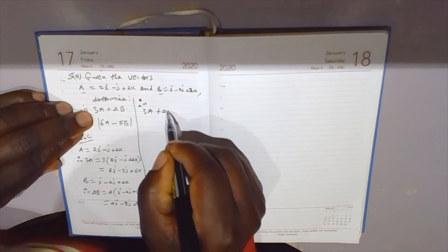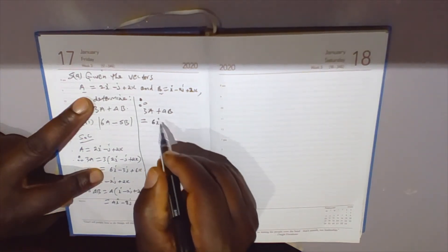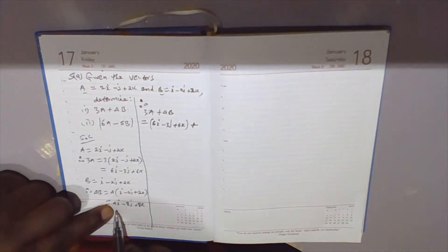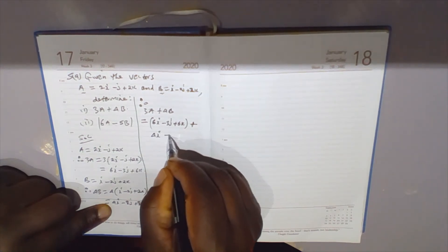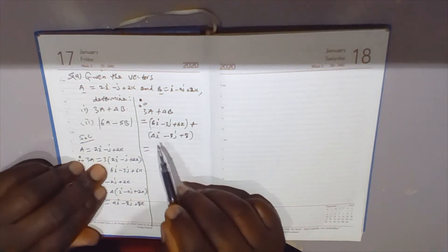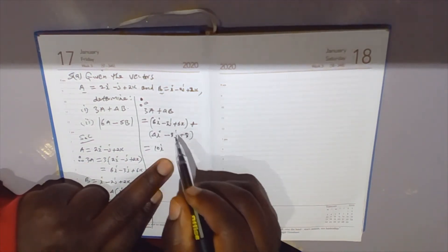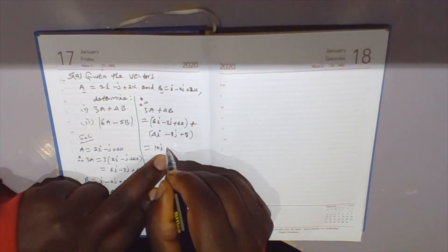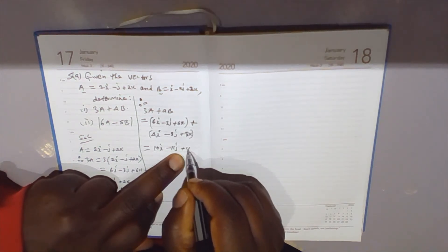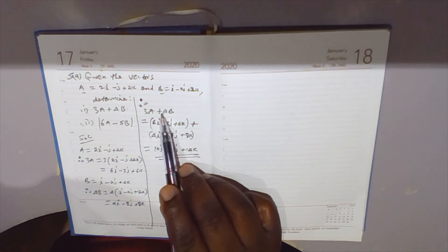3a plus 4b equals (6i - 3j + 6k) plus (4i - 8j + 8k). We add the corresponding values: 6i plus 4i gives 10i, negative 3j plus negative 8j gives minus 11j, and 6k plus 8k gives 14k. So the answer is 10i - 11j + 14k.